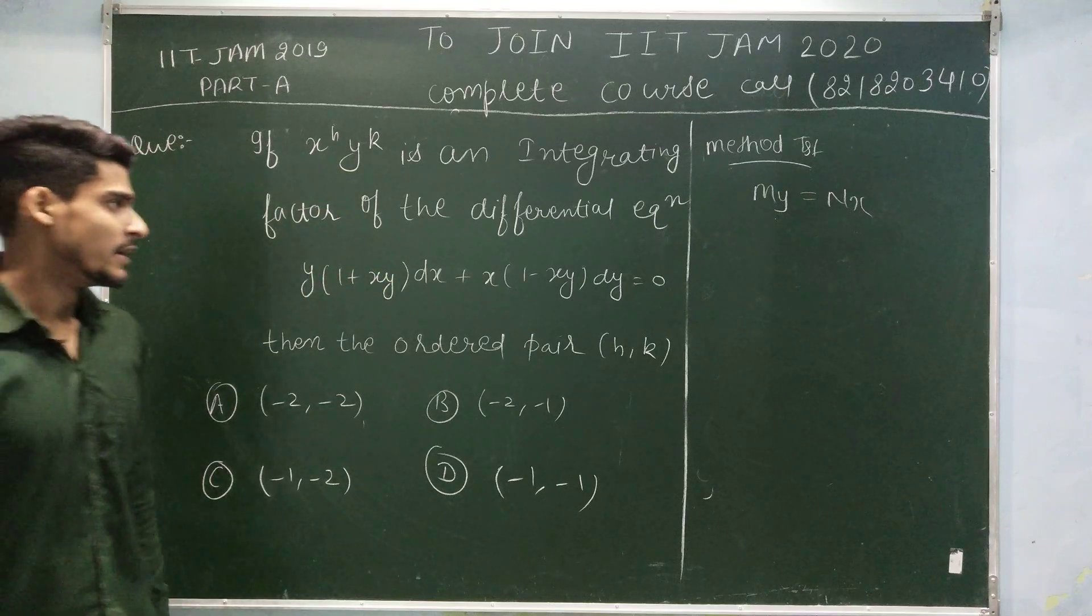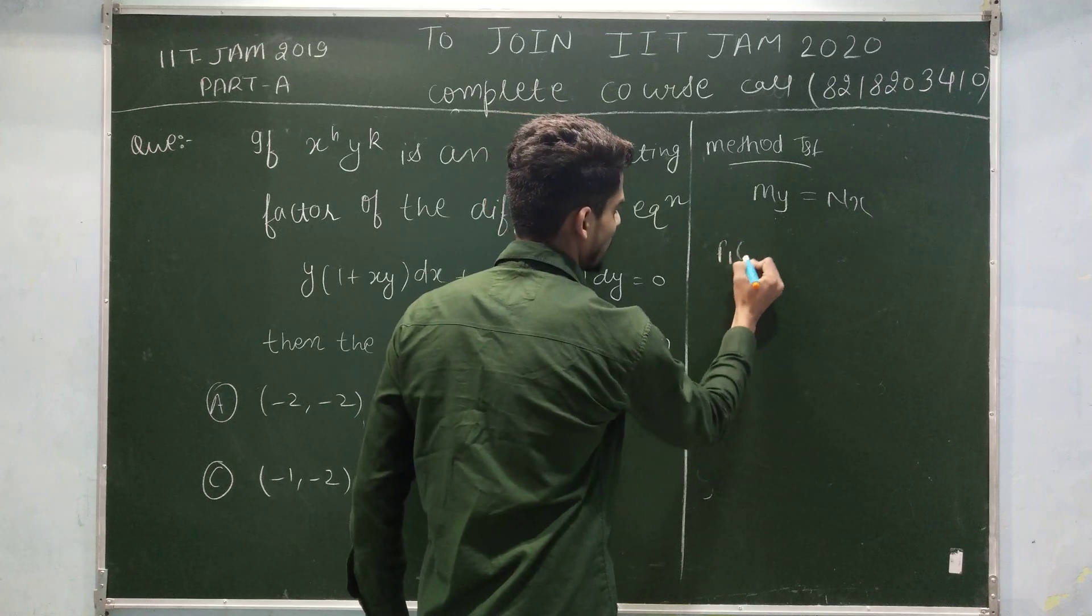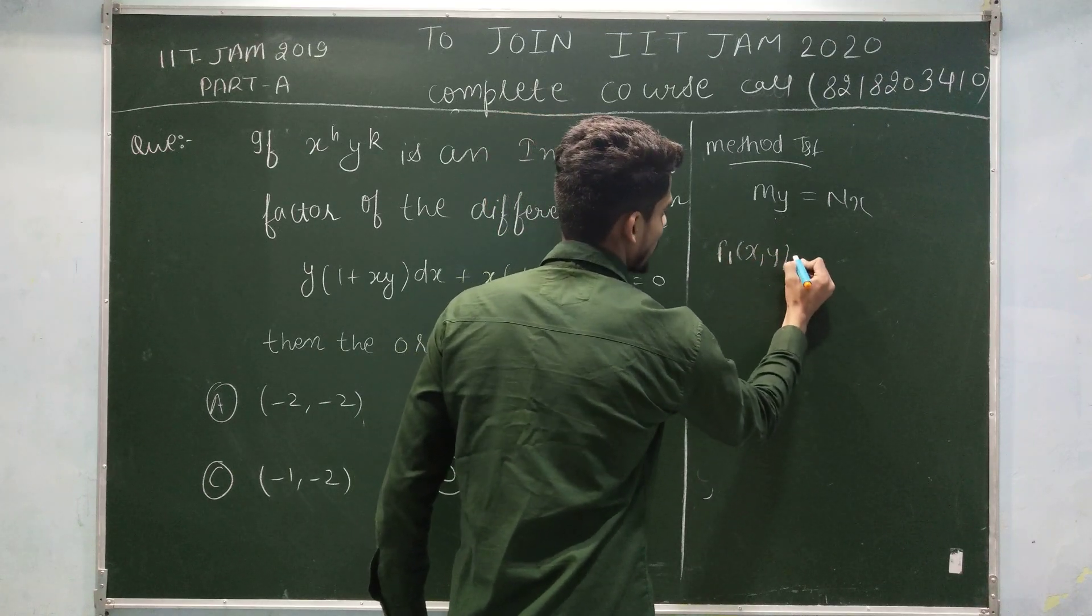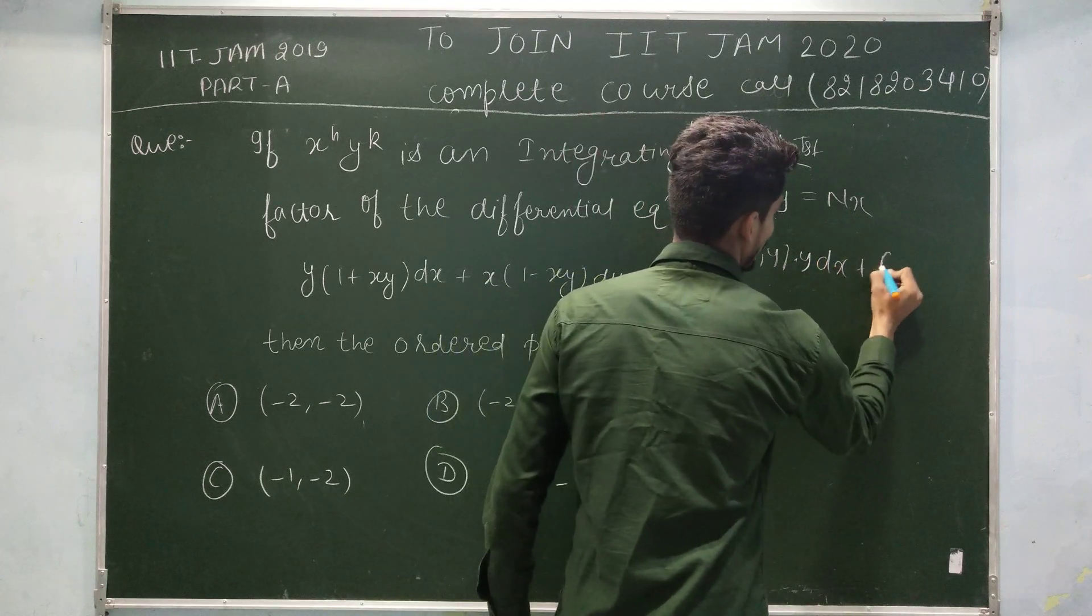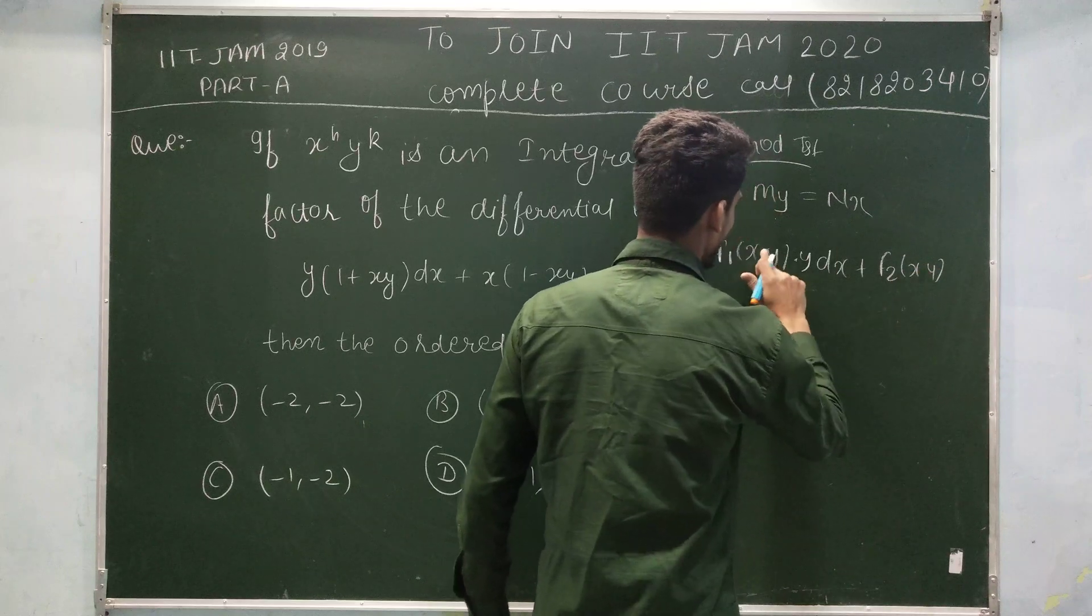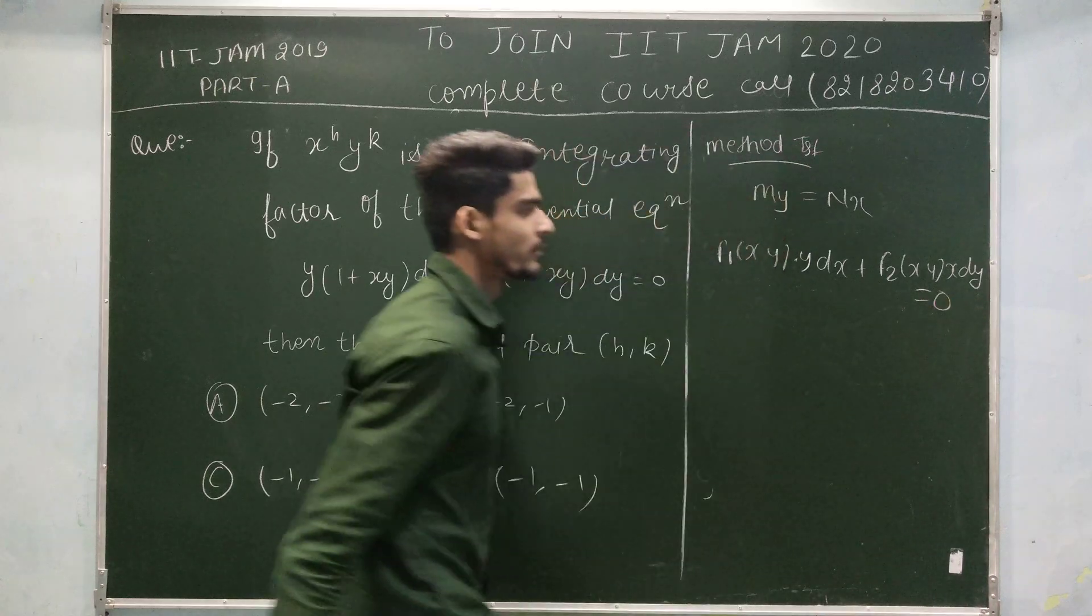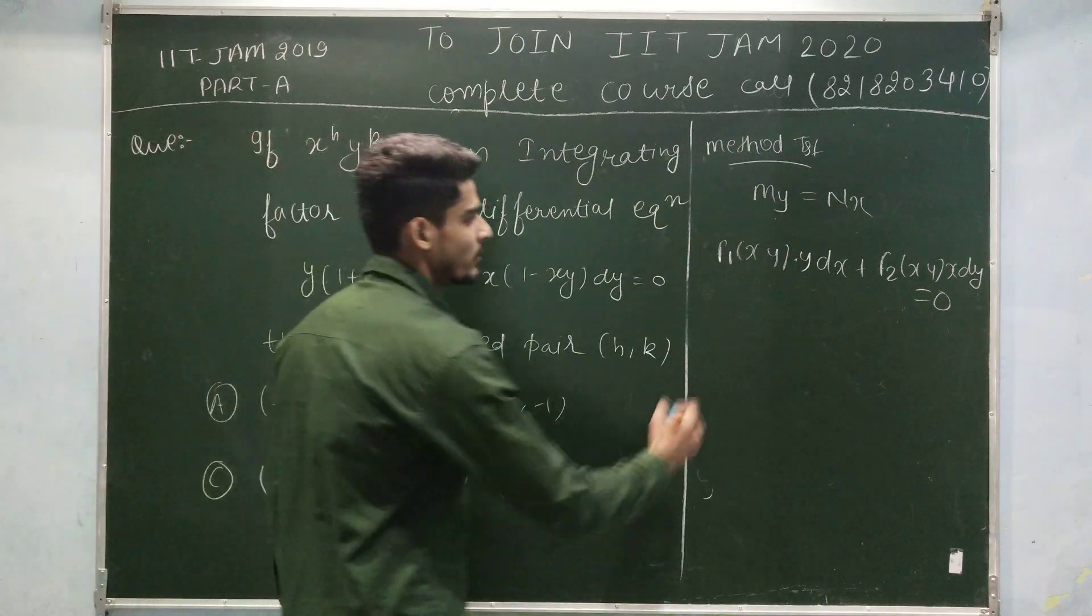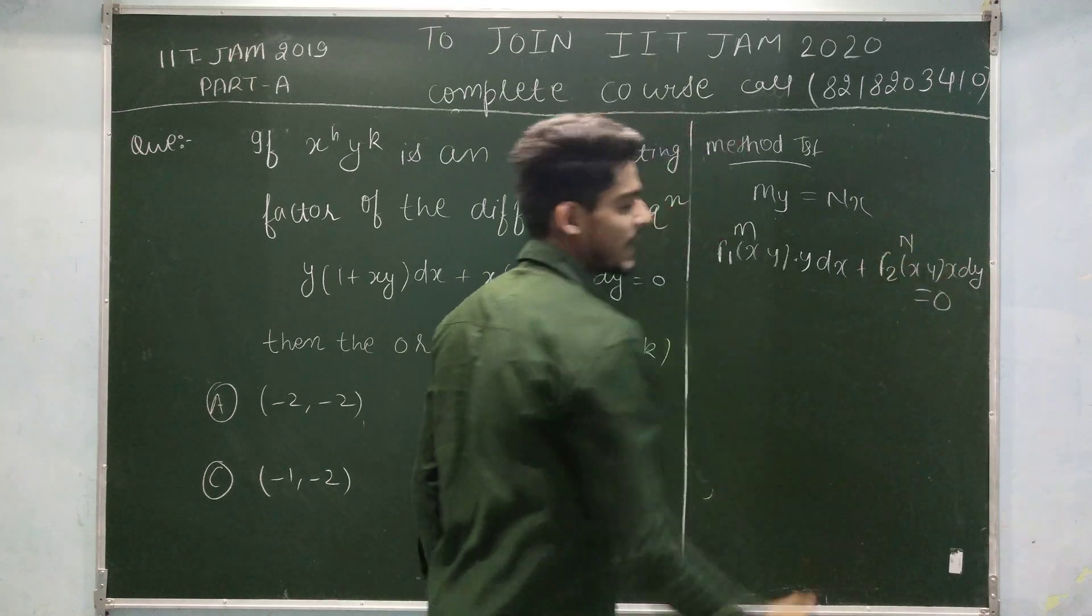And another method is if there is a differential equation of the form some f1 which is a function of xy into y dx plus some function of xy, x into y, x dy is equal to 0. Then if this term is called as m and this term is called as n,